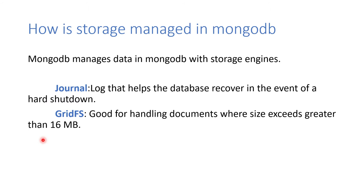MongoDB manages data with the storage engine in terms of journaling, specifically with WiredTiger. It creates logs between checkpoints to help recover the database in case of a hard shutdown. If the database crashes between checkpoints, the journal files containing serialized transaction details are used for recovery. There is also GridFS, useful when documents exceed 16 MB in size.